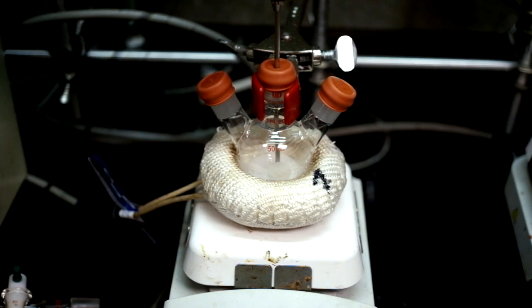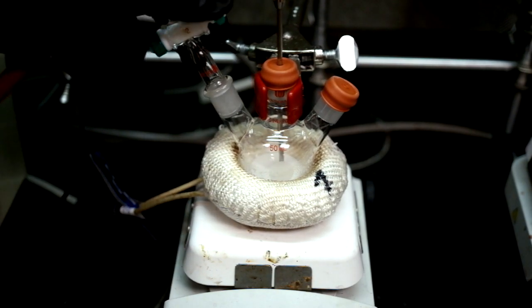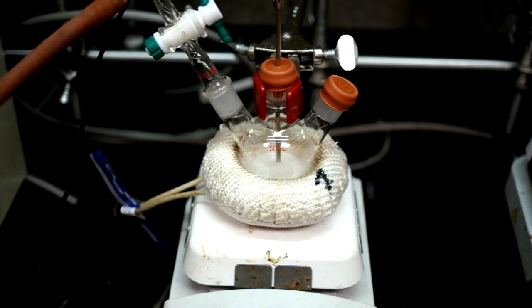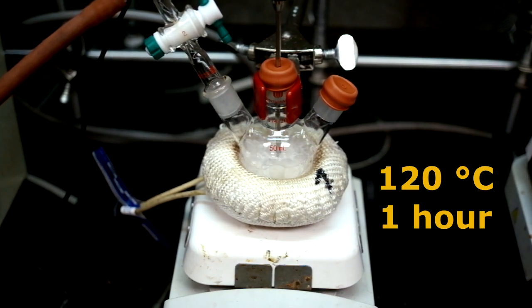For each of the three flasks, we insert a temperature probe, turn on the magnetic stir bar, and place under vacuum for one hour at 120 degrees Celsius.